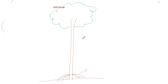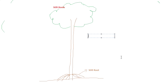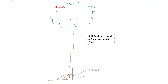These structures are called stilt roots — that is a modification in the adventitious root. Stilt roots are found in sugarcane and in Pandanus. Pandanus is the scientific name.